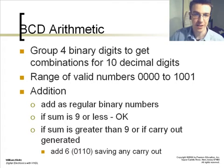BCD arithmetic. Group 4 binary digits to get combinations of 4 decimal digits. A range of valid numbers, 0000 to 1001, is available. Add as regular binary numbers. If the sum is 9 or less, it's okay. If the sum is greater than 9, or if a carry out is generated, add 6 (0, 1, 1, 0), saving any carry out.